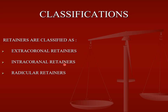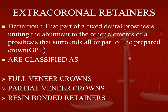Coming to the extra coronal retainer: it is a part of the fixed dental prosthesis uniting the abutment to the other elements of the prosthesis that surrounds all or part of the prepared crown. It is classified as full veneer crown, partial veneer crown, and resin bonded retainers. Full veneer crowns include PFM, all metal, and all ceramic crowns. Partial veneers include anterior three-fourth, posterior three-fourth, and seven-eighth crown.